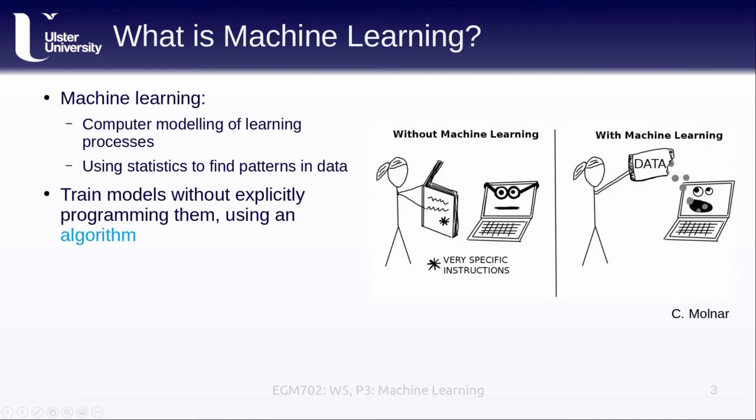We're also training these models to do certain tasks without explicitly programming them using an algorithm. If we're trying to get a computer to do something without machine learning, we have to have very specific instructions. The computer does the task according to those instructions, and we get a result that is hopefully fairly correct.